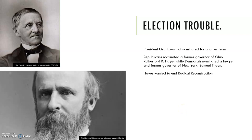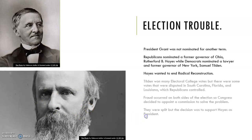President Grant was not nominated for another term. Republicans nominated a former governor of Ohio, Rutherford B. Hayes, while Democrats nominated a lawyer and former governor of New York, Samuel Tilden. Hayes wanted to end Radical Reconstruction. Tilden won many electoral college votes, but there were disputed votes in those three states — South Carolina, Florida, and Louisiana — which Republicans controlled.